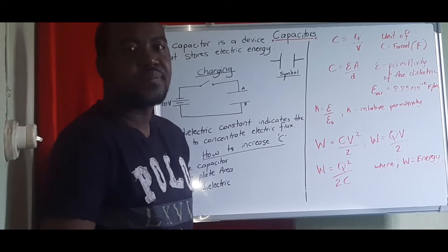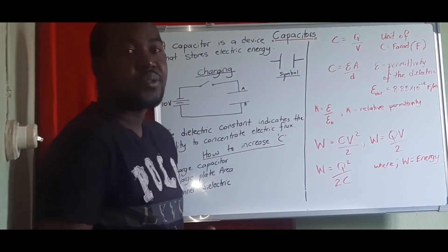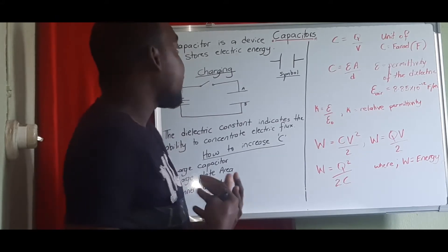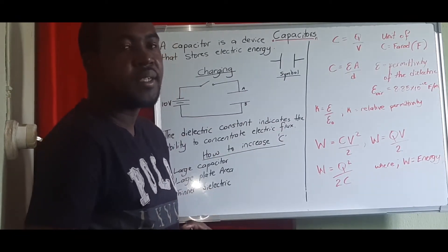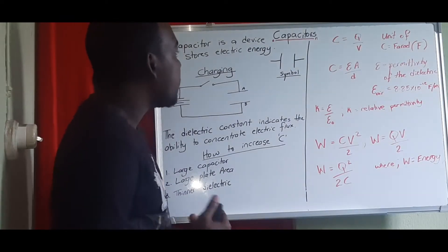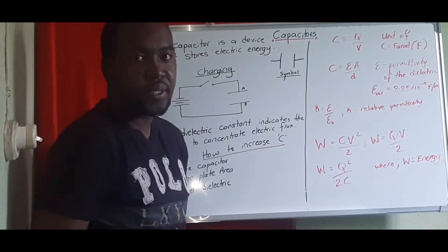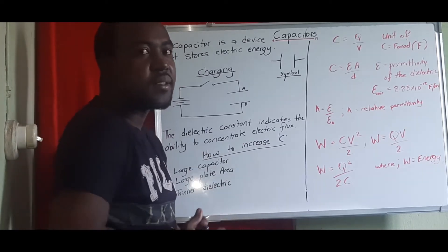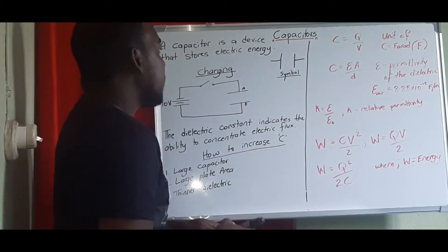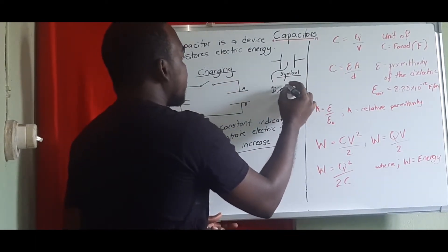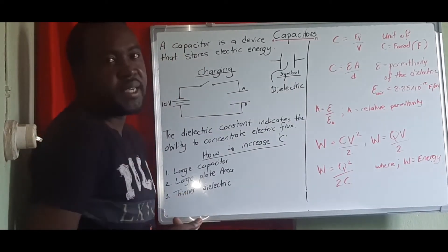Welcome to another video. Today we're looking at capacitors — devices that are used to store electrical energy by storing the charges that are flowing around the circuit. The symbol for a capacitor used in a circuit diagram is two parallel plates with a space between, which is exactly how the capacitor looks in real life. The gap between the plates symbolizes the dielectric, which we'll look at fully shortly.